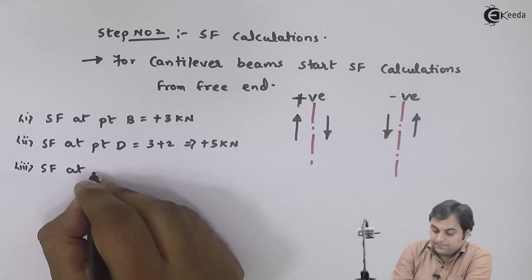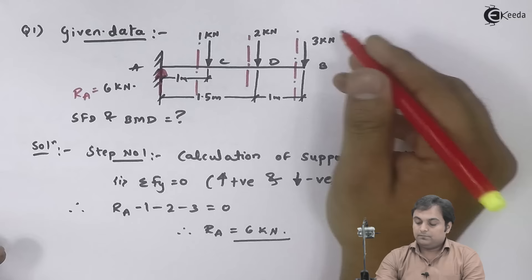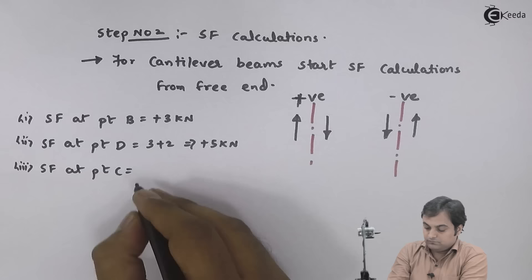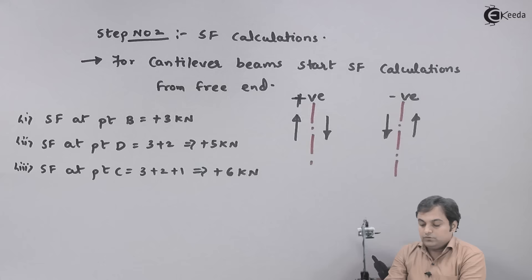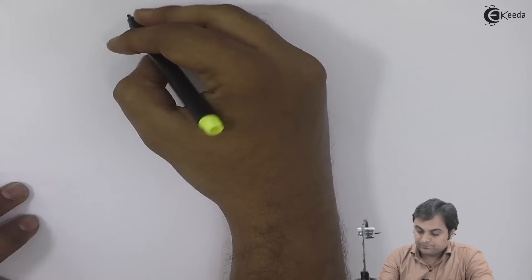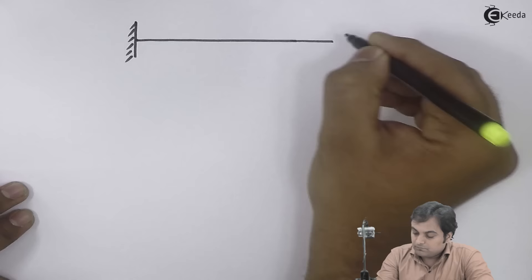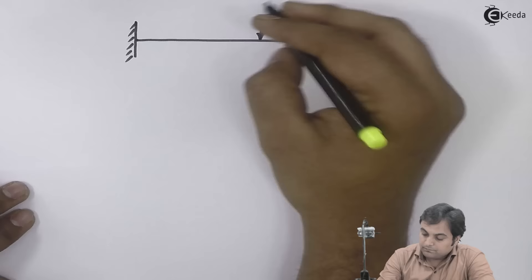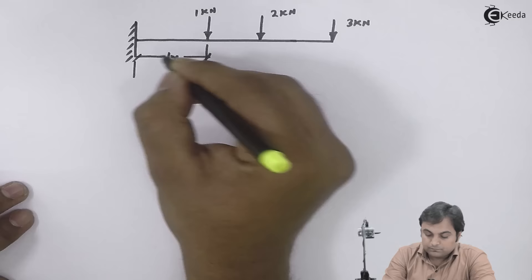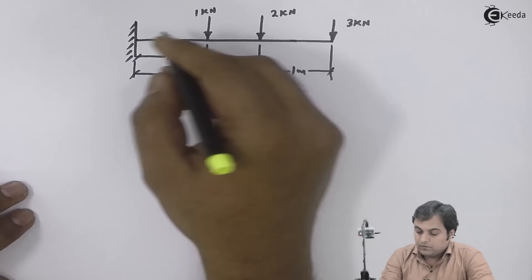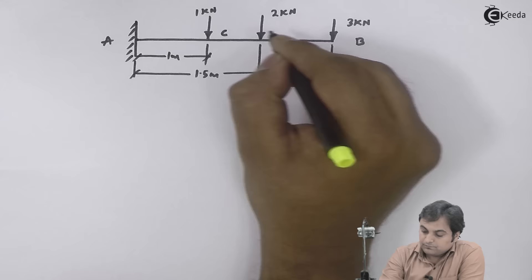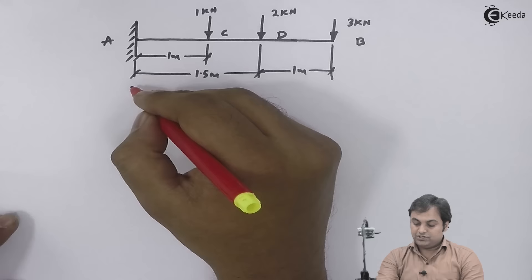Shear force at point C: taking the section to the left of C, we have 3 plus 2 plus 1 equals plus 6 kilonewtons. These are the shear force values. Based on these we can draw the shear force diagram, for which we draw the cantilever beam again.